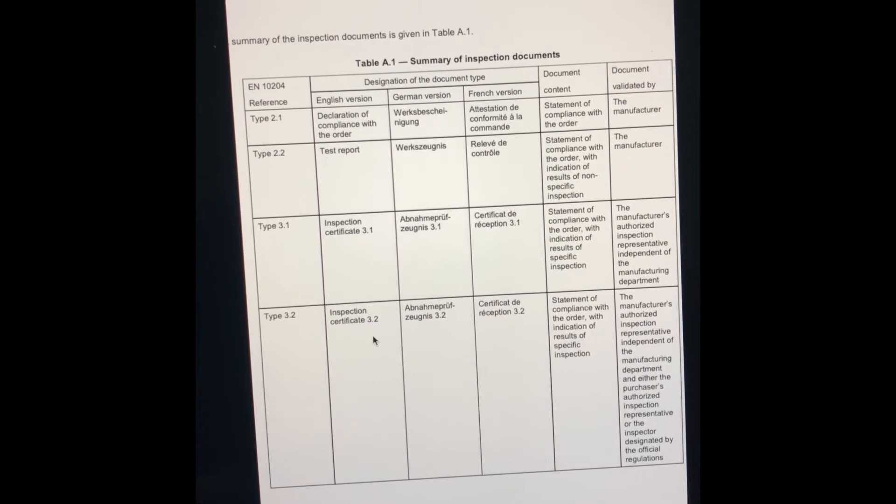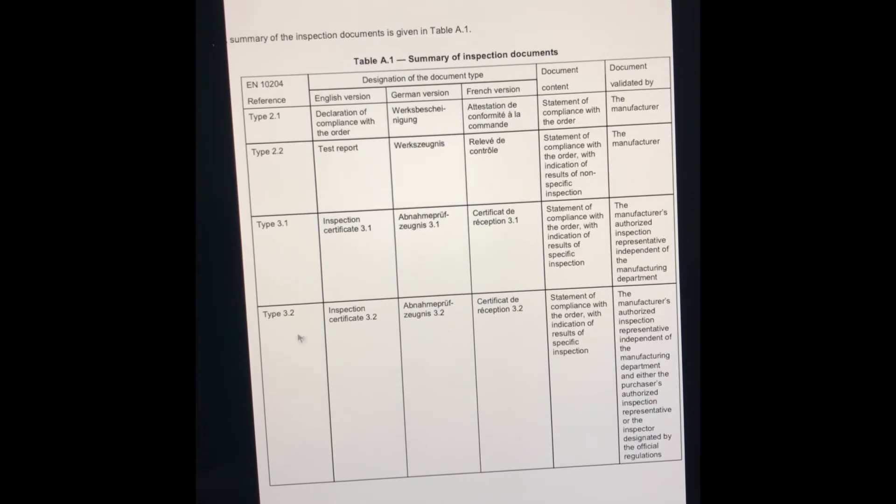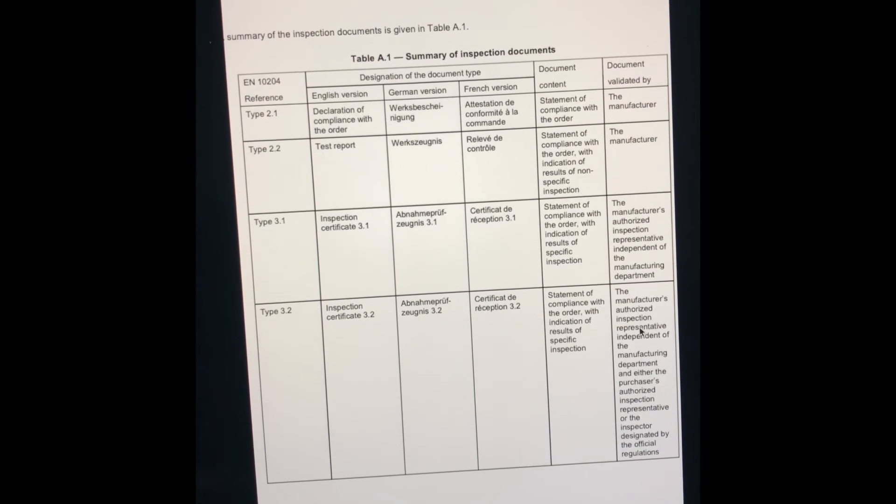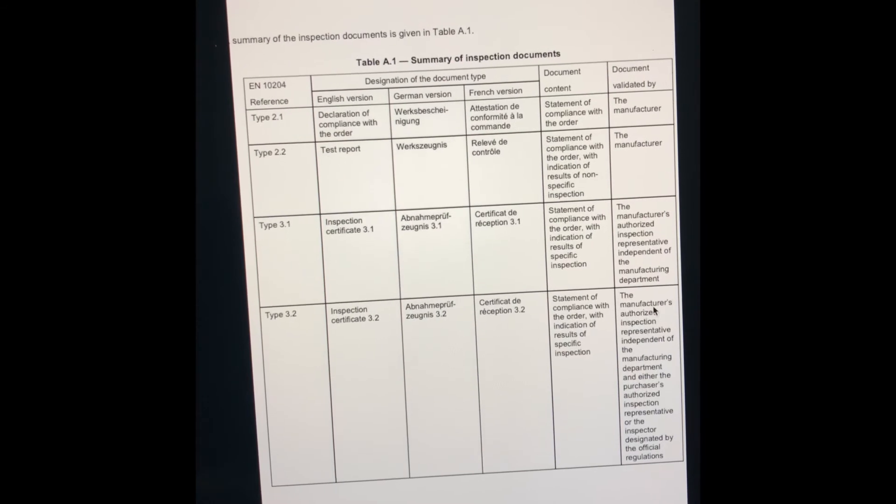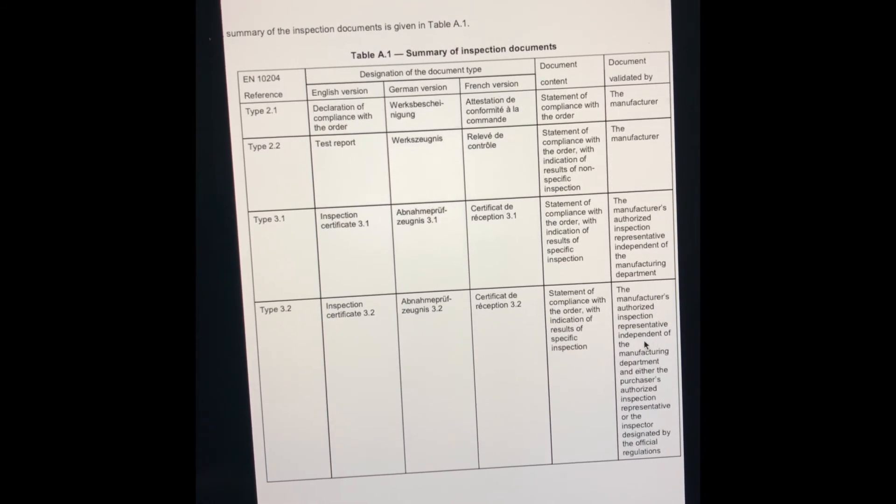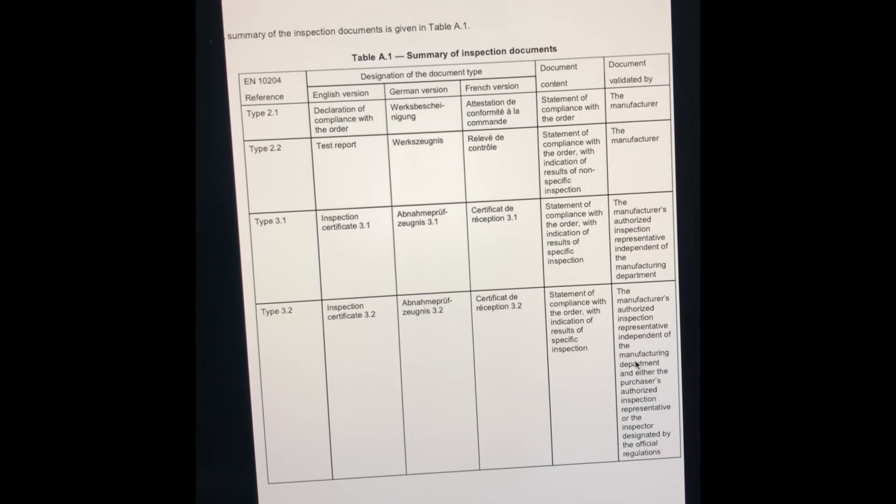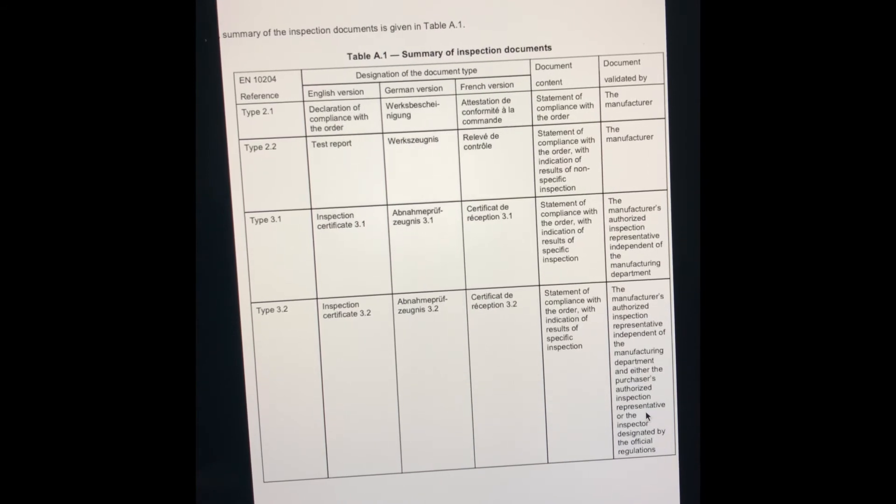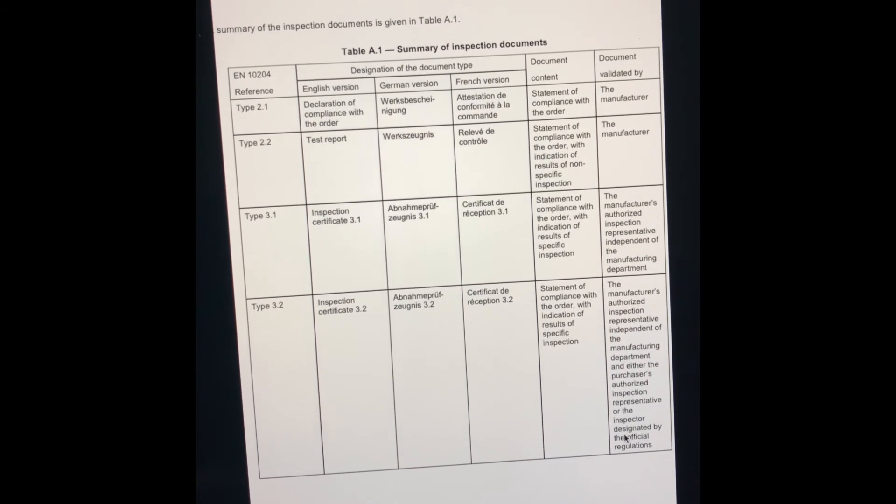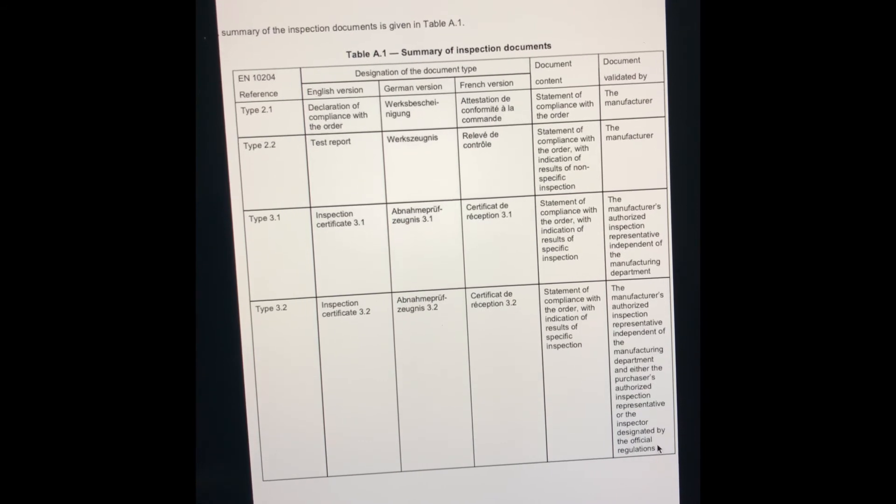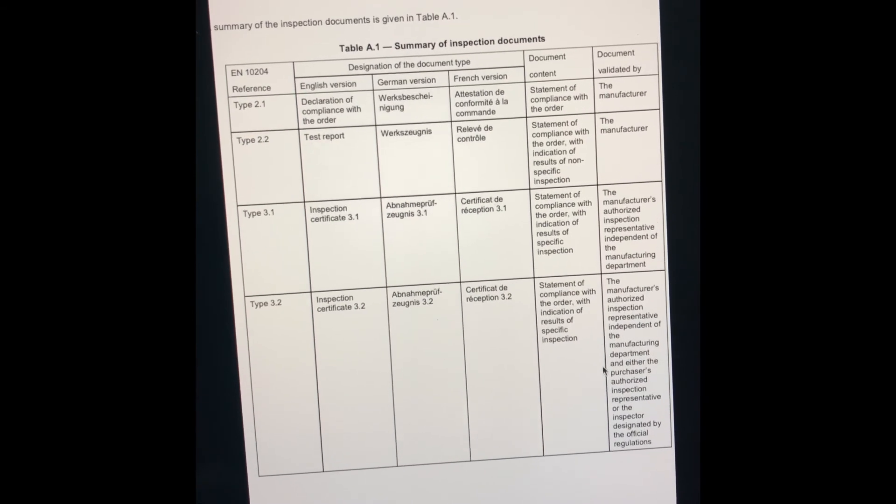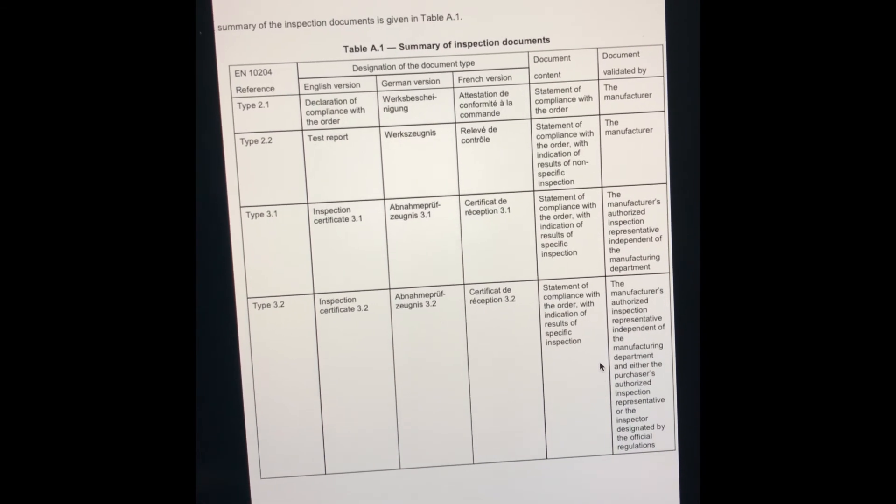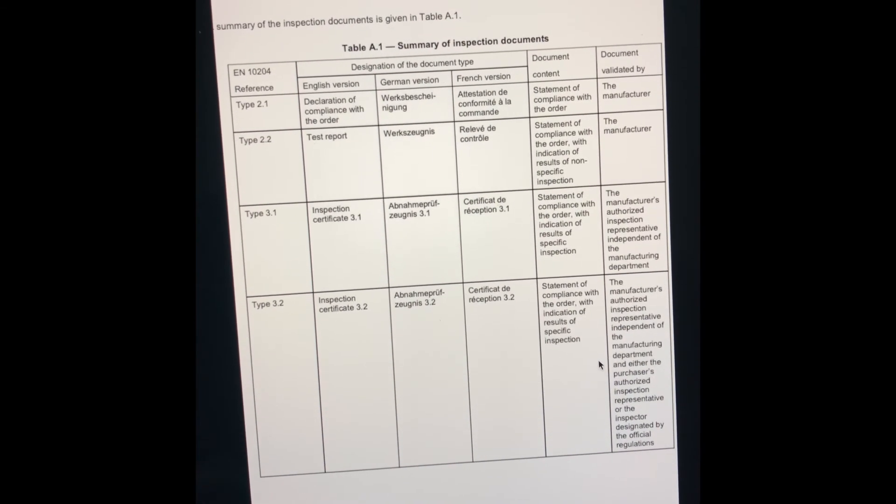For Type 3.2, same as 3.1 - the manufacturer's representative and a quality person will be witnessing. Additionally, the purchaser's authorized inspection representative or an inspector designated by official regulations can also take part in the inspection activities.